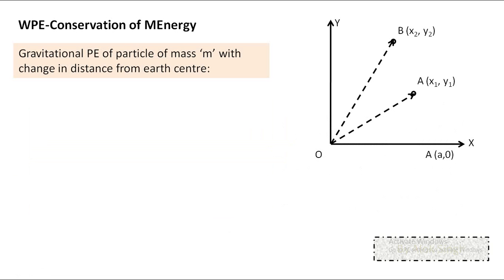In the first-year syllabus, we deal with only two types of potential energy or conservative forces: gravitational force and elastic (spring) force. Electrical forces will be dealt with in second year. We will first cover gravitational potential energy, then spring potential energy, and finally cases where both forms are involved together.